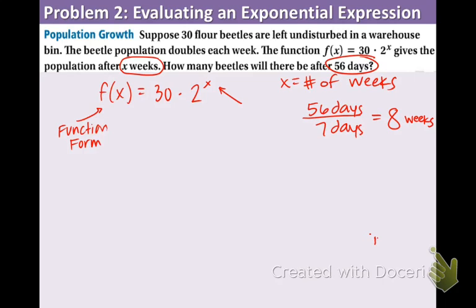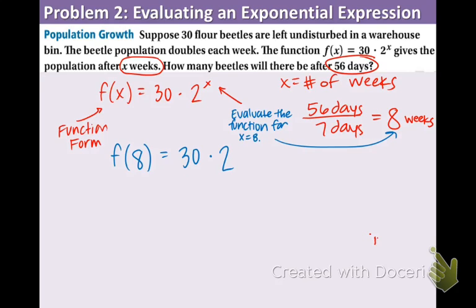So that is the number that we're going to plug in. We're going to evaluate the function for x equals 8. And the 8 came from right there. So that means we're plugging in the 8. So the 8 goes in the x spot on the left and also the x spot on the right. So we have 30 times 2 to the 8th. 2 to the 8th is 256. And lastly, we just need to multiply by 30 and we're going to get 7,680. So after 56 days, there will be 7,680 beetles.